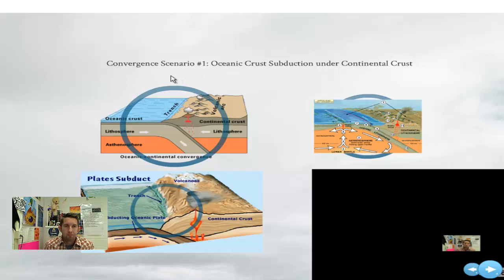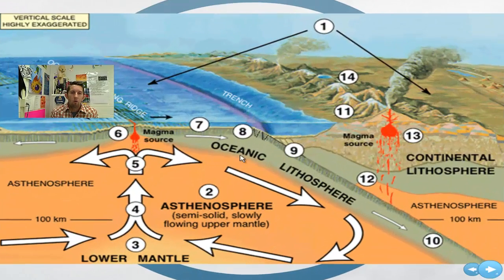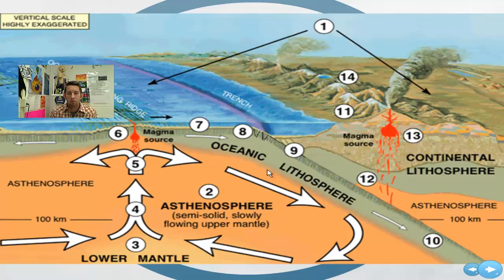Starting with convergence. With respect to convergence, there are a few different scenarios. The first one: you could have an oceanic crust and a continental crust — how do they interact? An oceanic crust can subduct under continental crust. Remember our convection currents. Here we have a convection current moving clockwise, pushing this plate to the right. We have a continental plate over here moving counterclockwise, so it's moving to the left. The heavier oceanic crust is going to subduct underneath.